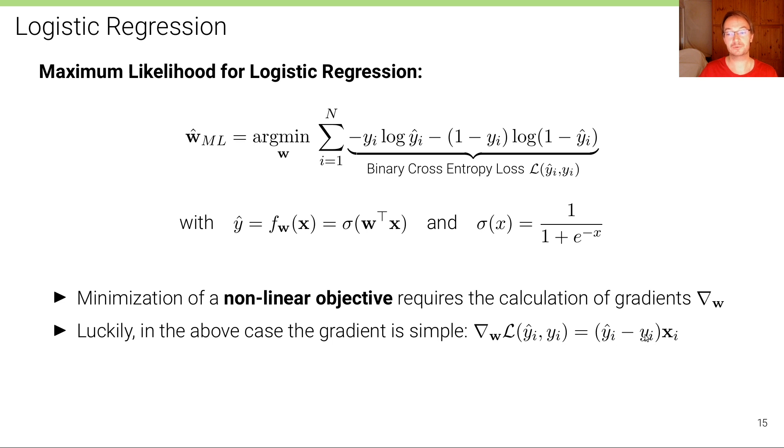The gradient is simply the prediction of the model minus the true label times the input at data point i. It's a very simple equation. Unfortunately, it's not true that these gradients are so simple to compute in general for more complex models that we are interested in this lecture, in particular for deep neural networks that layer a lot of computations where you simply can't with pen and paper derive the gradients.